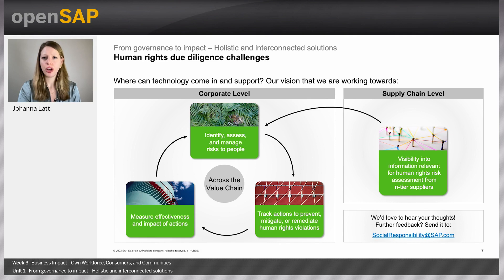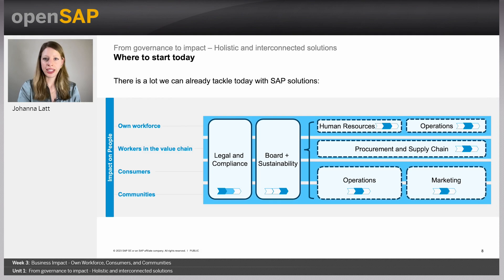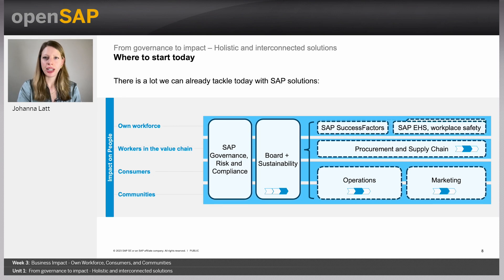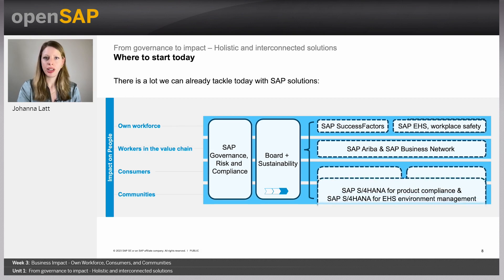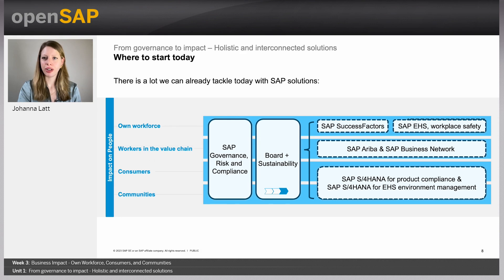SAP's vision is to provide software solutions for all of these challenges, and we're actively working on our solution proposals. There is already a lot that SAP solutions can do for you right now. For legal and compliance on corporate level, you can leverage SAP's existing offerings for risk management as part of our governance, risk and compliance solution portfolio. For your own workforce, SAP offers SAP SuccessFactors along with SAP S/4HANA for EHS workplace safety. For workers in the supply chain, there is SAP Ariba and the SAP Business Network. For consumers and communities, we have SAP S/4HANA for product compliance and EHS environment management. SAP's Sustainability Control Tower can help bring insights back to the board.